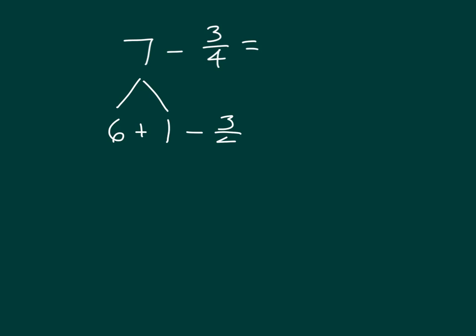And then we can subtract 3 fourths from that. We had worked earlier with subtracting from wholes. So we had 1, which we can rewrite as 4 fourths minus 3 fourths. And do not forget to add back in the 6. So we have 6 plus 4 fourths minus 3 fourths, and 4 fourths minus 3 fourths is 1 fourth. So we have 6 plus 1 fourth, which we saw earlier is the mixed number 6 and 1 fourth. So 7 minus 3 fourths is 6 and 1 fourth.